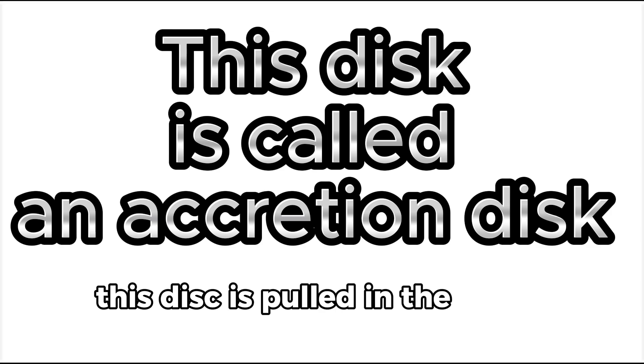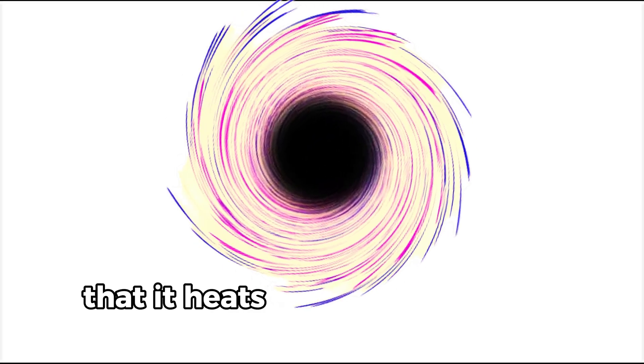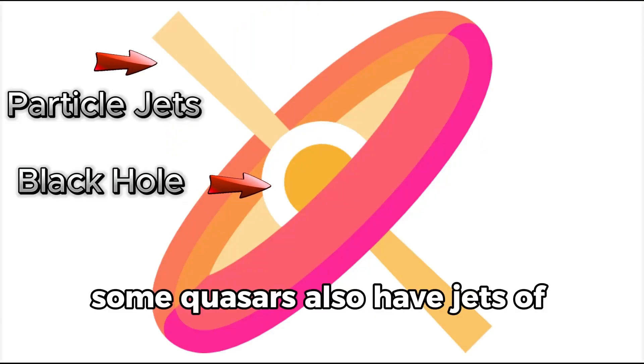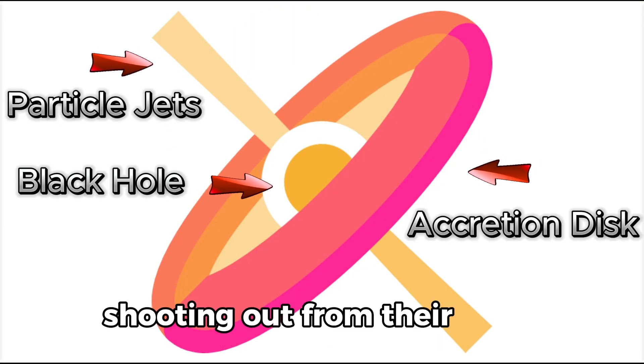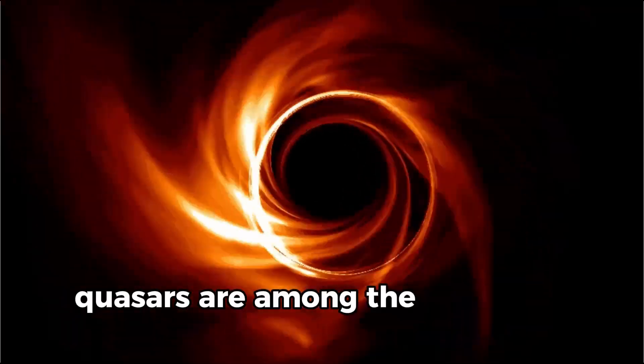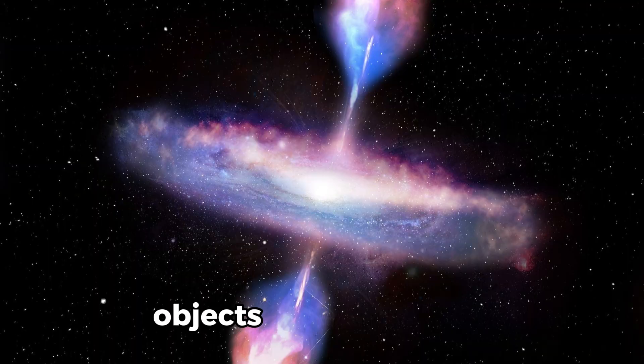This disk is pulled in the black hole with such force that it heats up and shines very brightly. Some quasars also have jets of high-energy particles shooting out from their poles, moving at nearly the speed of light. Quasars are among the brightest and most energetic objects in the universe.